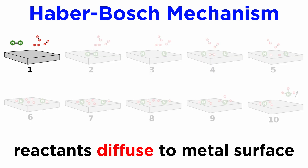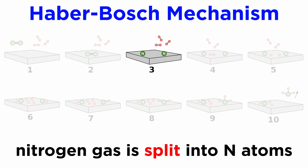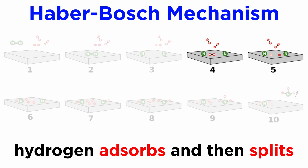In the first step, the reactants diffuse toward the catalytic surface, and in step 2 they are adsorbed, meaning they form weak bonds with the surface. In step 3, nitrogen is split into two nitrogen atoms, which are tightly bound to the metal and have been described as metal-nitrene complexes. This is usually the step requiring the high temperature, which means it is the rate-determining step because of the strength of the nitrogen-nitrogen bond.